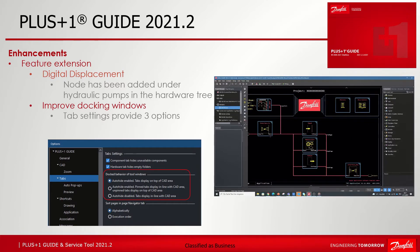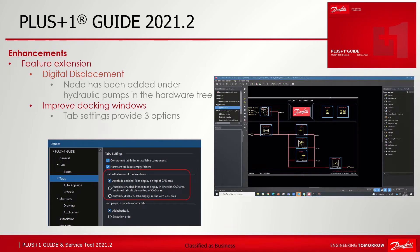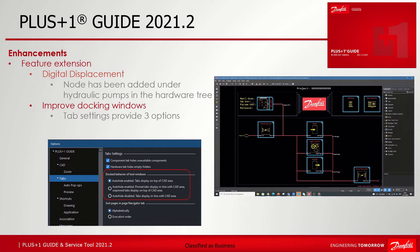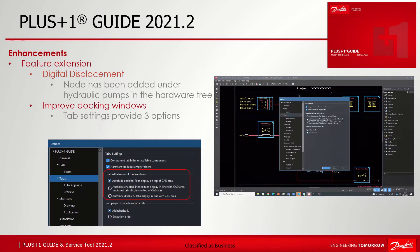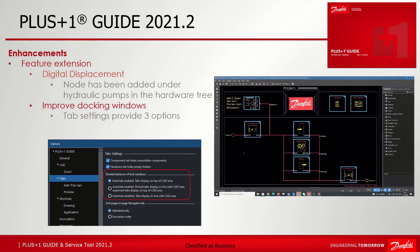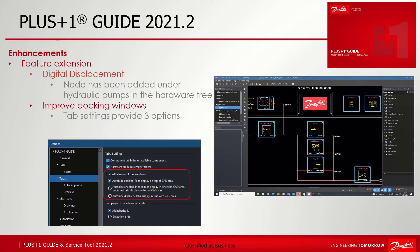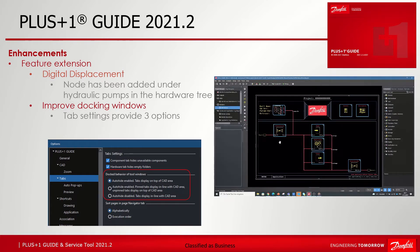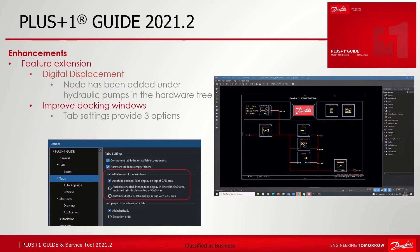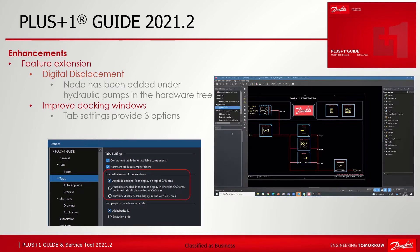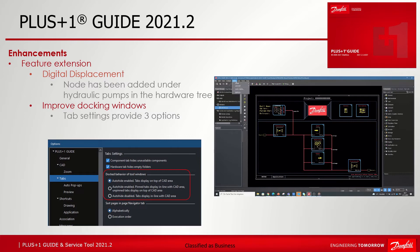The cut area is not affected doing so because the windows are displayed on top. Zoom in the drawing area will also end up in another window. The second option is auto height enabled, pinned tabs display in line with cut area, unpinned tabs display on top of cut area — a kind of hybrid mode. The cut area keeps unaffected until the window gets pinned, which will resize the cut area. This setting might be helpful when you want some tabs pinned and some not.